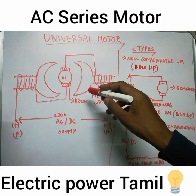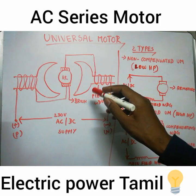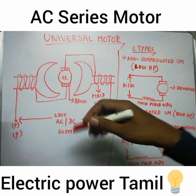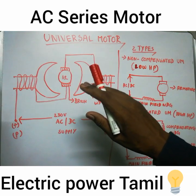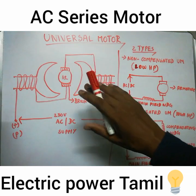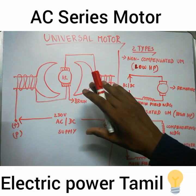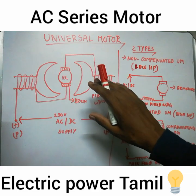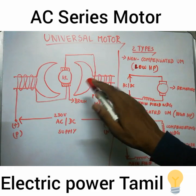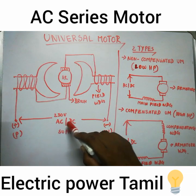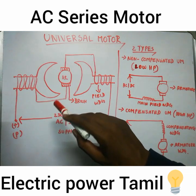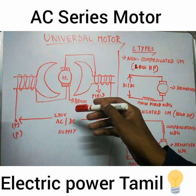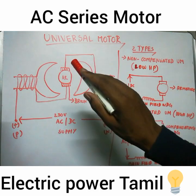The universal motor is related to the DC series motor. In the DC series motor, we can modify it into the universal motor. There is AC supply or DC supply — it is only 180V AC or DC. This motor is perfect.